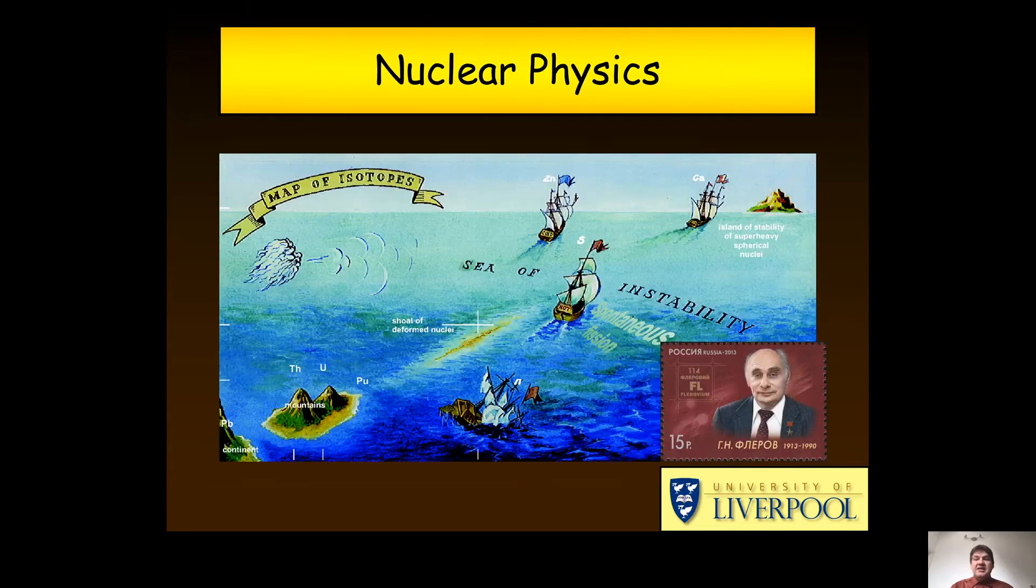So if we want to put together heavier elements, then we need to do it differently. This illustration is by Georgi Flerov, a Russian scientist working on the creation of new elements in the last century. It shows that if a neutron capture is no longer sufficient, one may be able to add more protons by fusing two nuclei together, giving a potentially much larger number of protons.